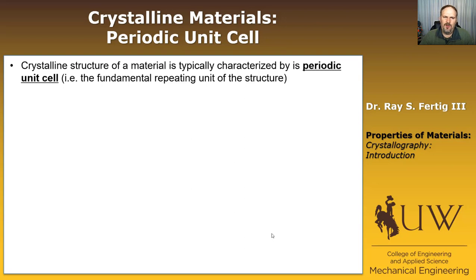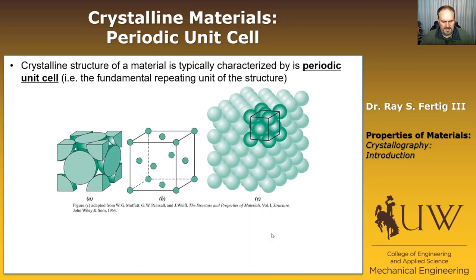One final thought that I want to leave with you as we talk about crystalline materials is a fundamental way that we characterize them. So typically crystalline materials are going to be characterized by what's called a periodic unit cell. And all that is, is the fundamental repeating unit of the structure. So you could create the structure just by stacking this unit over and over again. So here's an example of that. So this structure, you don't know, we haven't talked about it yet, but it's called a face centered cubic structure.